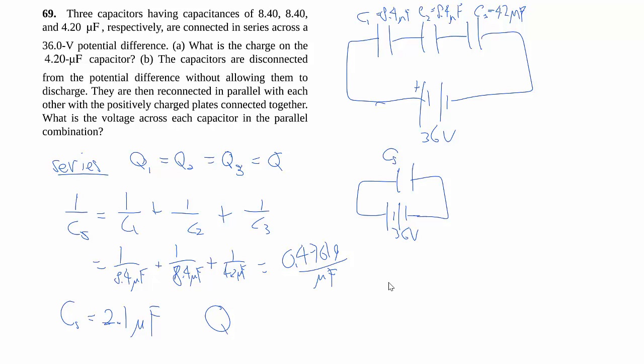So then the charge, which is the same as the charge on each of the individual capacitors in the series, is given by C times V, where C is Cs, and V is the overall voltage because it's fully charged. If you look at the loop rule here, you gain 36 and you must drop another 36. So you take the 2.1 microfarad, multiply by 36 volts, we'll end up with 75.6 microcoulombs, which is equal to our Q3. So that answers our part A.